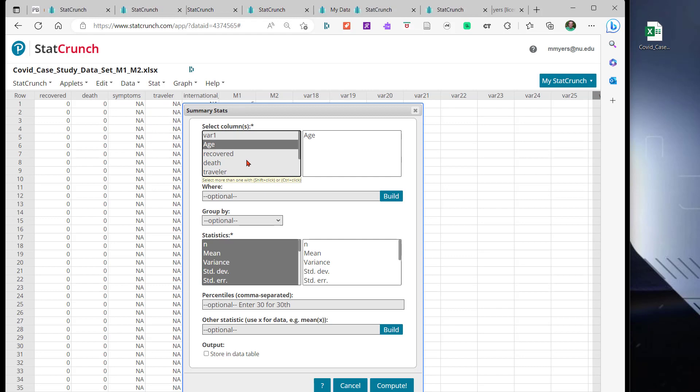By understanding the levels of measurement, statisticians can choose the appropriate statistical methods to analyze data and draw valid conclusions. This can help to avoid misleading results and inaccurate interpretations of data. We will discuss this further in the next lesson where we will learn about frequency distributions, tabulating and displaying data.